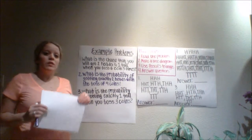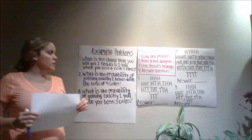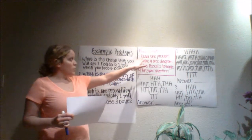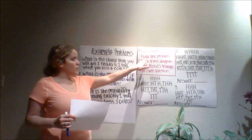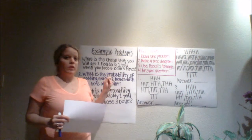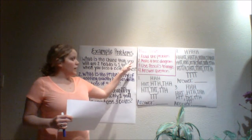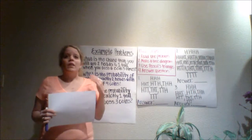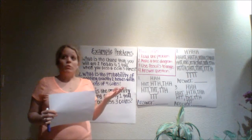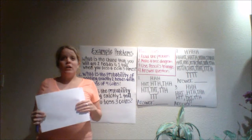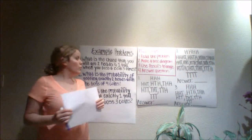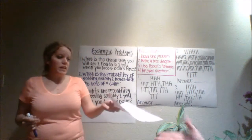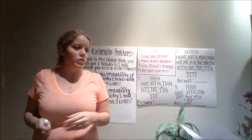We're going to learn a few steps first, and then we're going to work on an activity. The first step is we're going to read the problem. The second one is we're going to make a tree diagram. The third one, we're going to use our Pascal's triangle. And then the fourth one, we're going to answer the question. Here is the handout for everyone to look at.